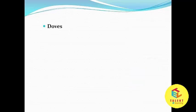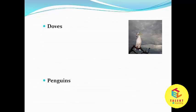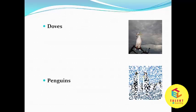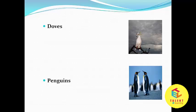Which is the next? Yes, this alphabet is D. D for doves. Which is the next? Yes, it's P. P for penguins. Here you can see doves. And it is the penguin.